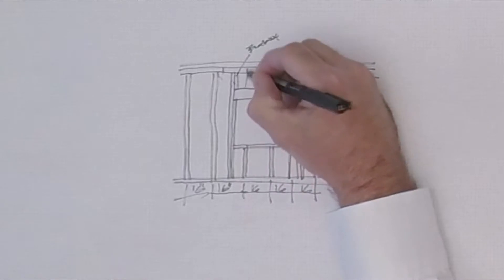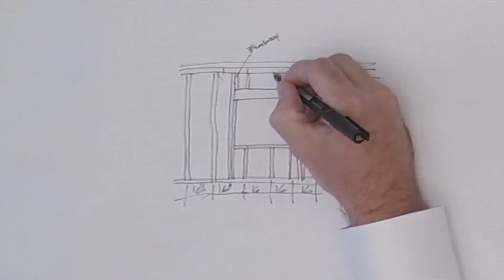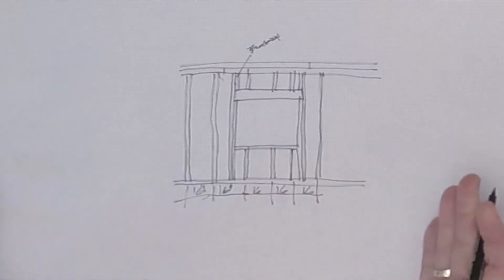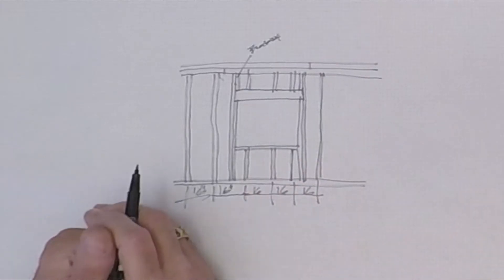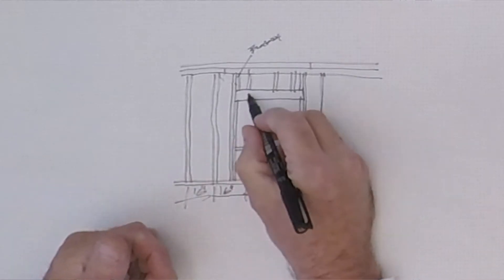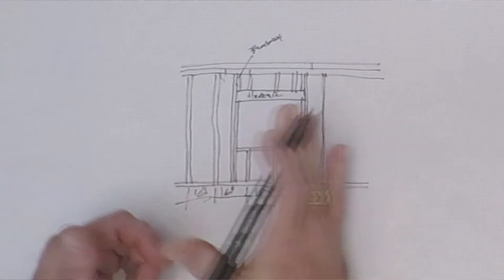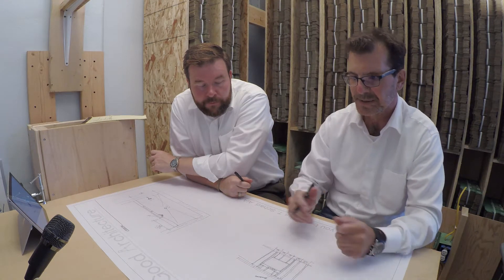Above that, we line these up above there as well. And that's typically how a window gets framed. You'd have your header, and that needs to be given to you by an engineer, or the architect that works with you can size that. But that's typically how a window goes in.